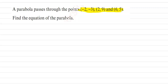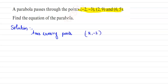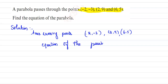Now we need to find the equation of the parabola. We are given the axis crossing points as (-2, -3), (2, 9), and (6, 5). The equation of the parabola in general form is y = ax² + bx + c.